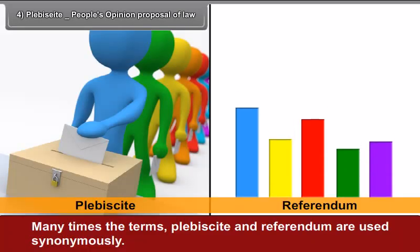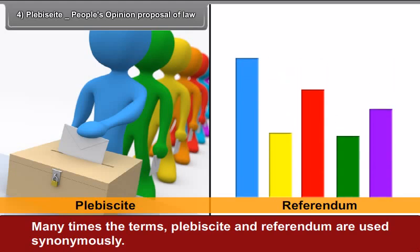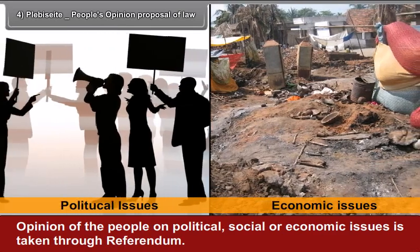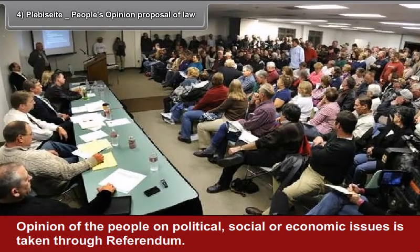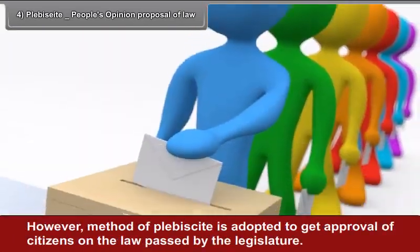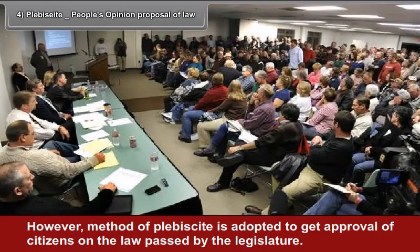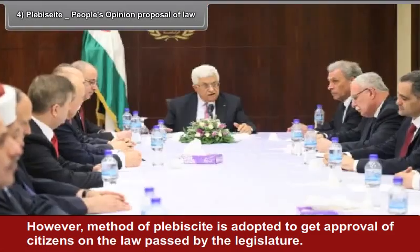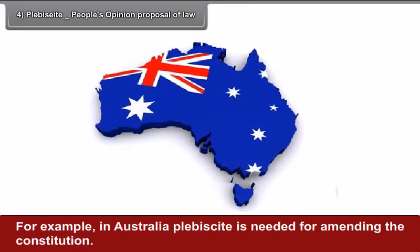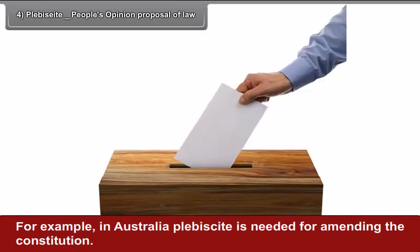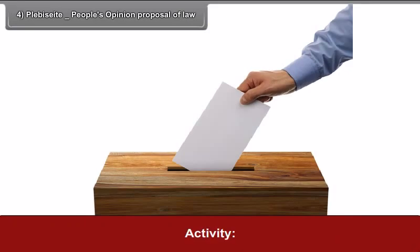The fourth measure is Plebiscite — taking people's opinion on a proposal of law. Many times, the terms plebiscite and referendum are used synonymously. Opinion of the people on political, social, or economic issues is taken through referendum. However, the method of plebiscite is adopted to get approval of citizens on the law passed by the legislature. For example, in Australia, a plebiscite is needed for amending the constitution.